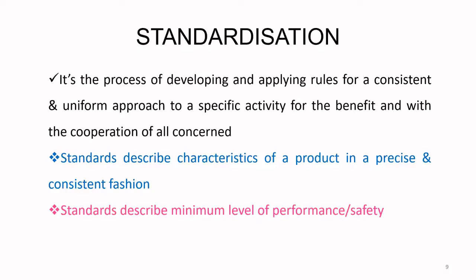When we say standards, we're talking about at least a certain level of performance the product can give you. Standards can be labeled A, B, C, D or class 1, 2, 3 — the nomenclature is up to you. You say standard one, two or three; standard A, A-plus, A-double-plus — and it describes the minimum level of performance or safety.